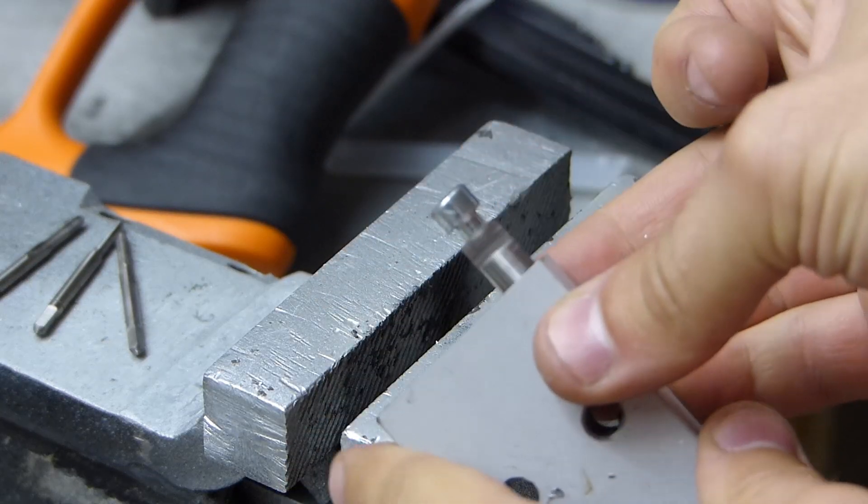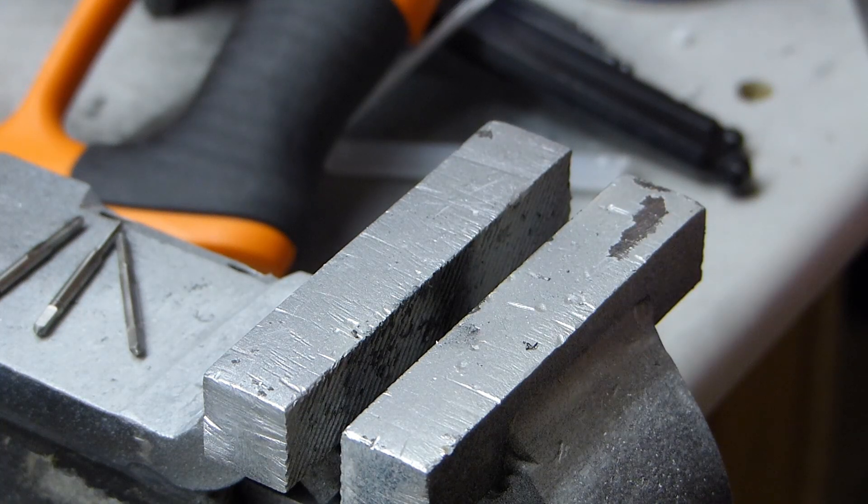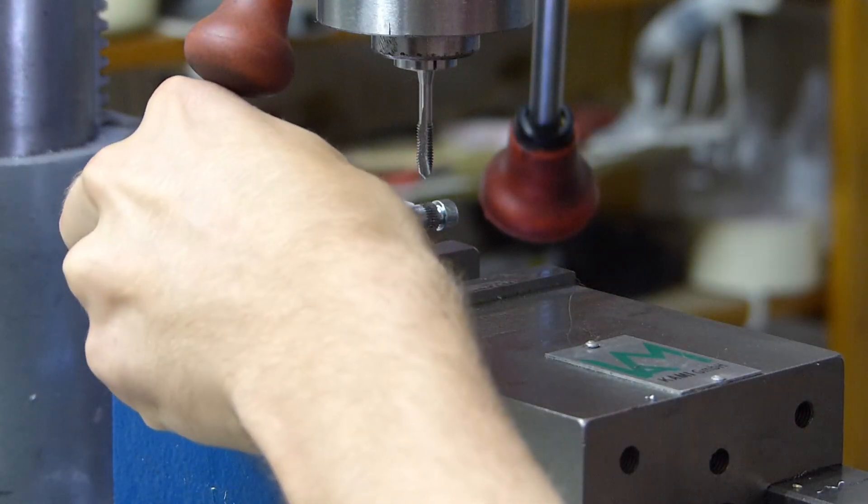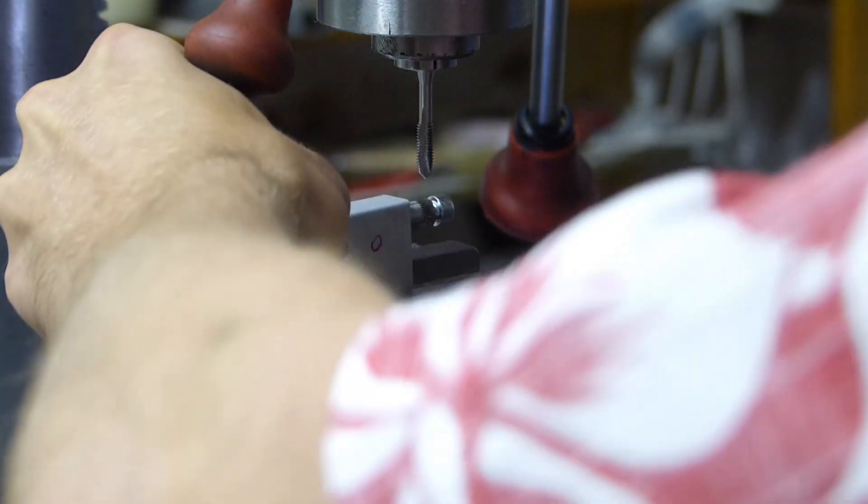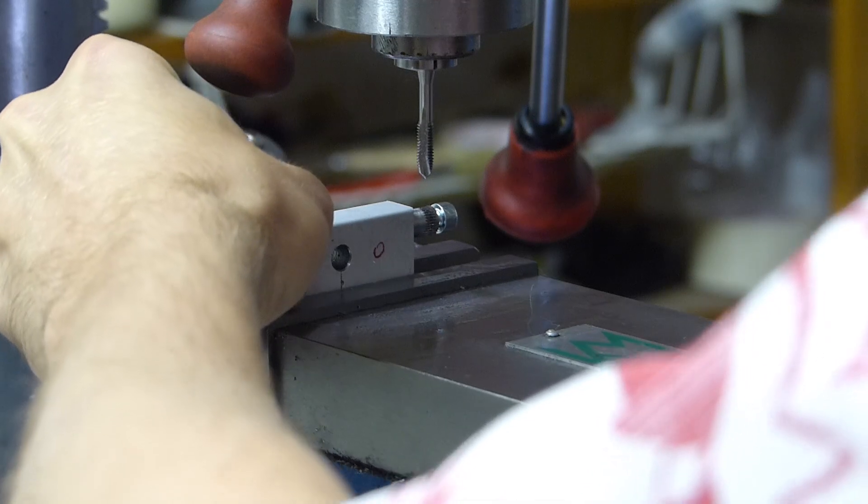Now for the actual hobbing you need to be very aware that you're actually abusing this tap. Now taps are not made to hob these stainless steel sleeves, so the most important thing is to go slow and to use plenty of lubrication.